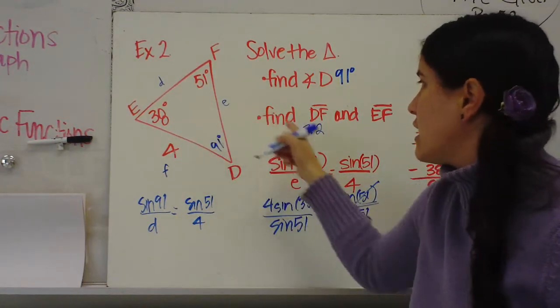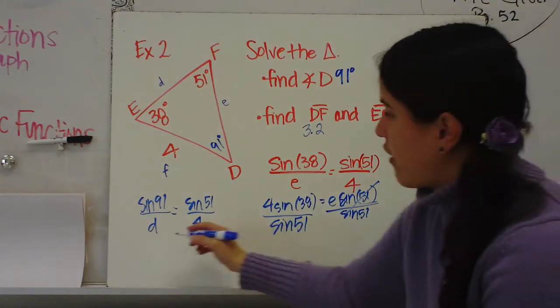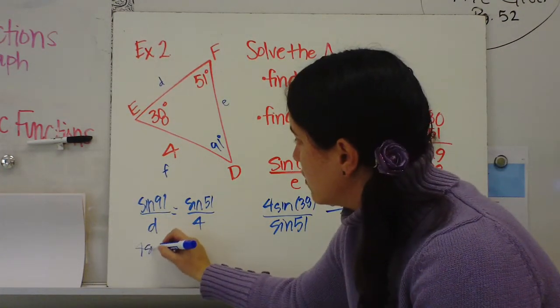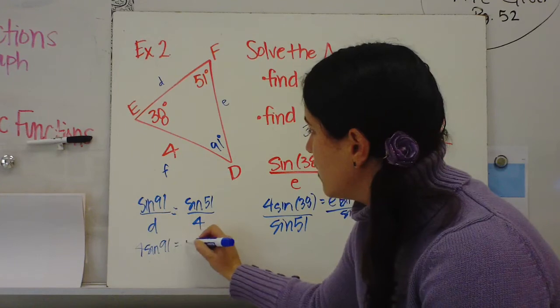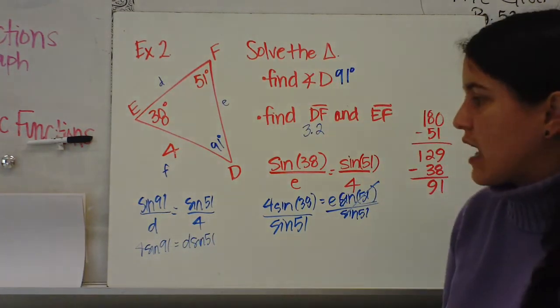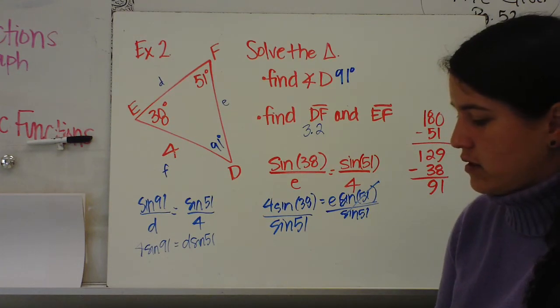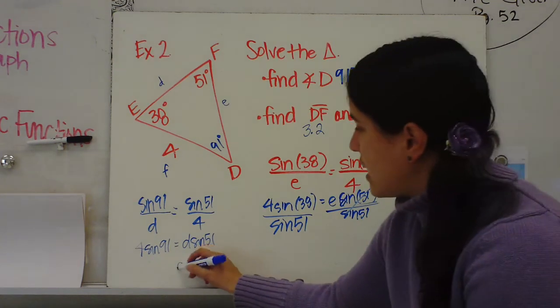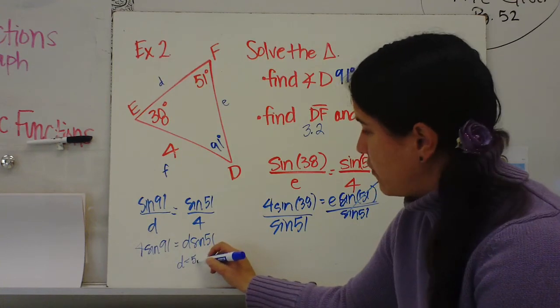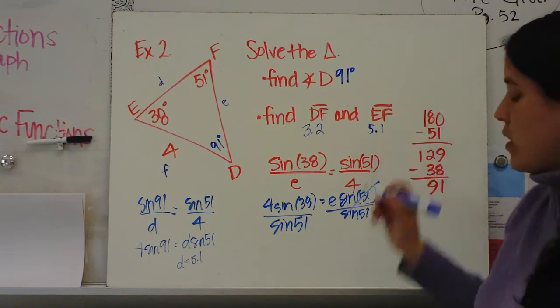You could use 38 and e, 3.2, but I'm just going to use 51. Cross multiply and then divide. So we're going to have 4 times sine of 91 equals d times sine of 51. Divide both sides by sine of 51. So 4 sine of 91 divided by sine of 51. And d equals 5.1. And that is the line EF of 5.1.